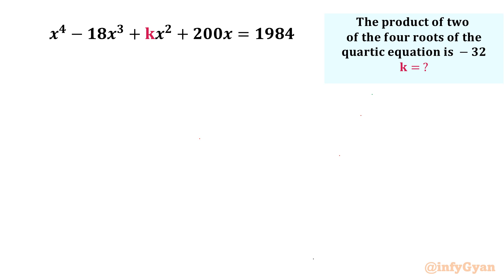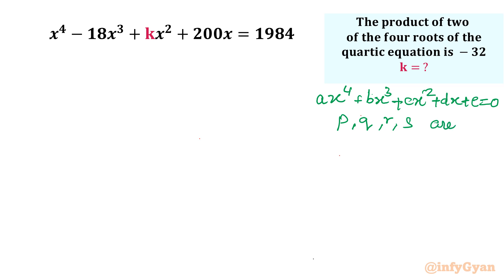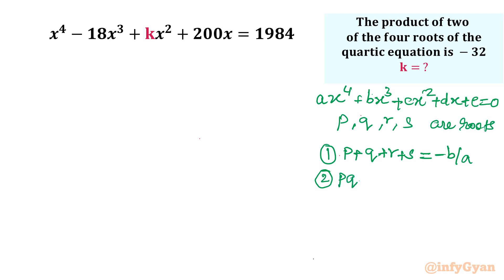Let us get started by considering the general form of a quartic equation using Vieta's method: ax⁴ plus bx³ plus cx² plus dx plus e equals 0. If p, q, r, and s are the roots, we can generate four formulas. The first formula is the sum of roots taken one at a time: p plus q plus r plus s equals minus b over a. The second formula is the sum of products of roots taken two at a time: pq plus pr plus ps plus qr plus qs plus rs equals c over a.